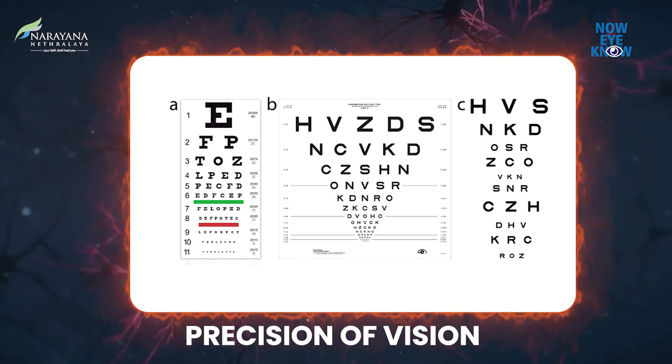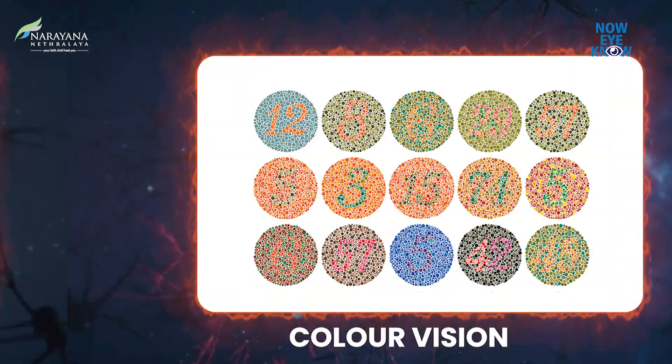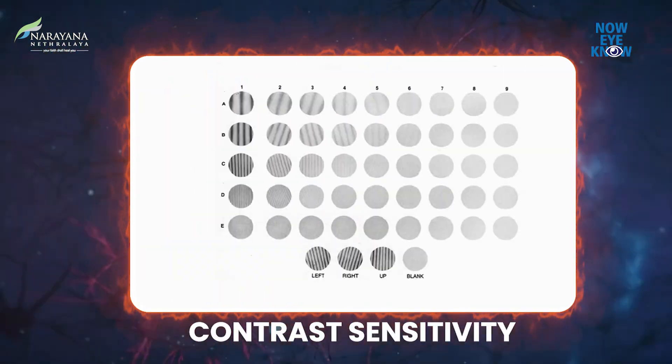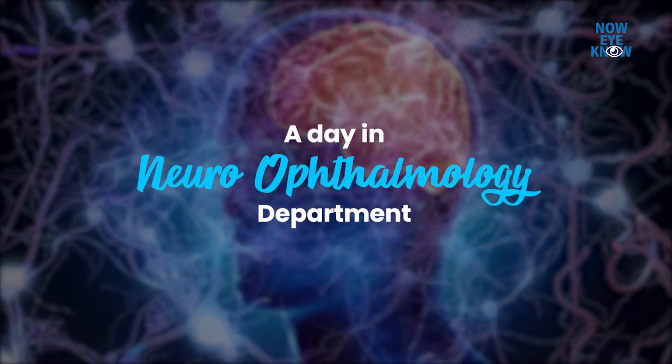Broadly, the functions of the optic nerve include the precision of vision, colour vision, contrast sensitivity, and the field of vision. Any patient with problems in any of these aspects will get thoroughly evaluated and treated at our neuro-ophthalmology clinic. So come, let's dive into a day in the neuro-ophthalmology department.